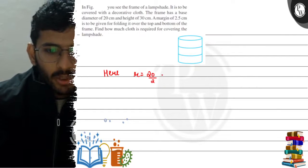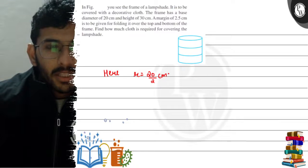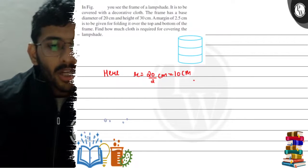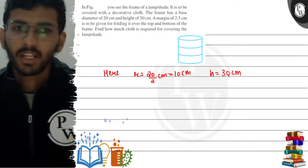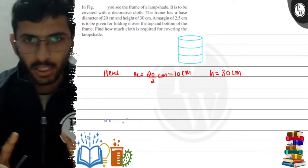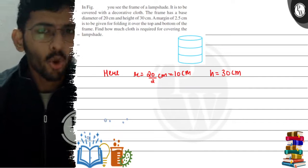The radius is 10 centimeters, and the height is 30 centimeters. But we have a margin.